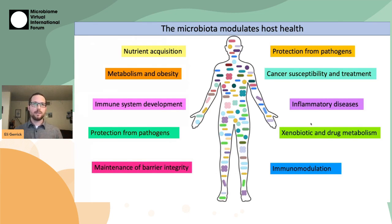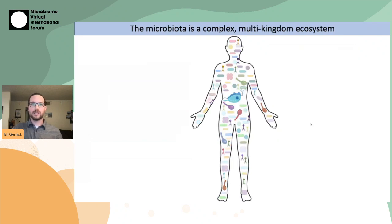Most work on the microbiota specifically focuses on the bacterial members of this community. But the microbiome is not just made up of bacteria — it also contains a lot of other organisms, including viruses, fungi, archaea, and protists. And protists in particular in the gut microbiota have been pretty much completely ignored.